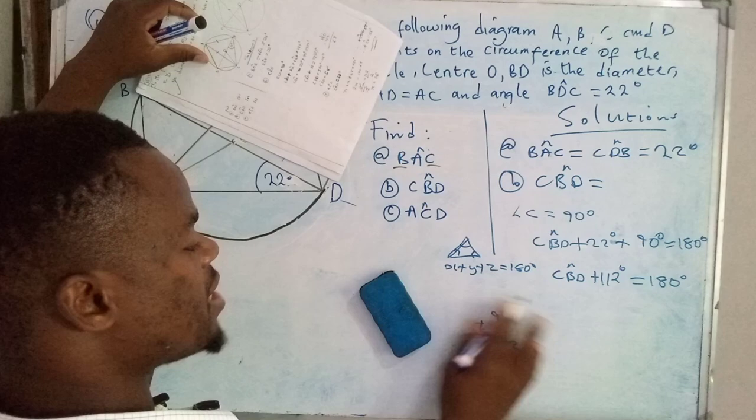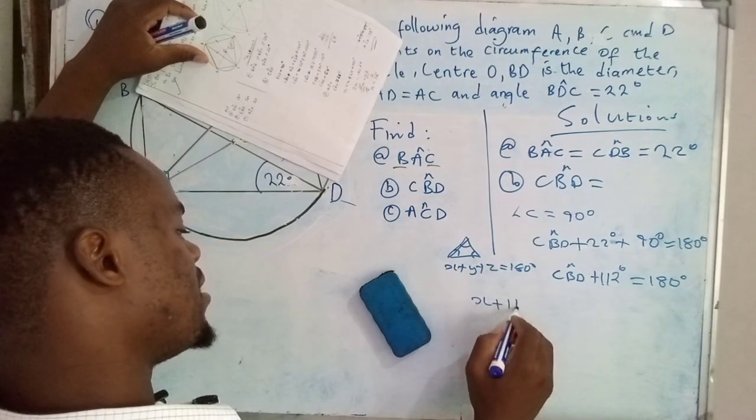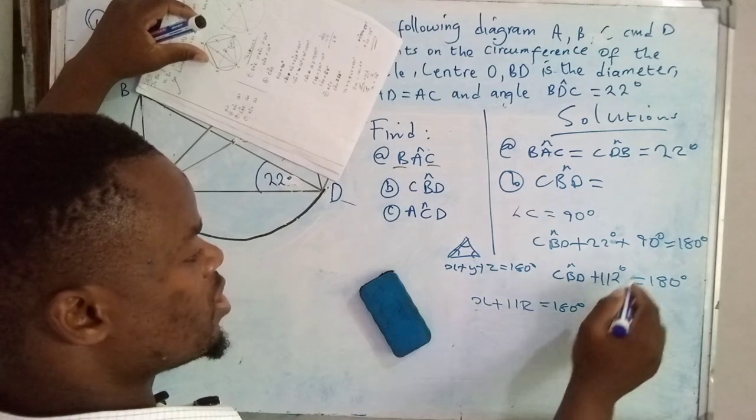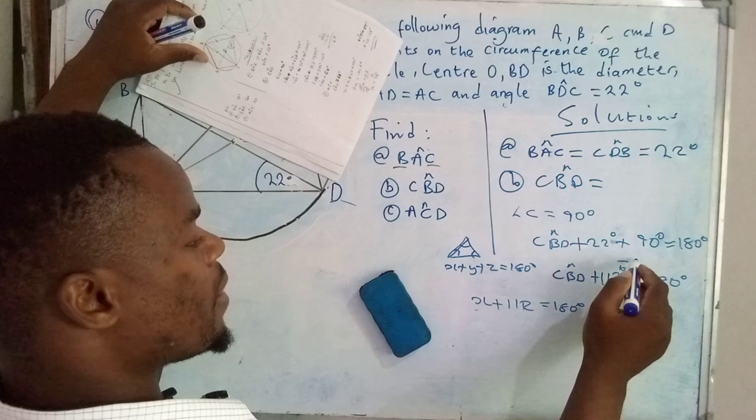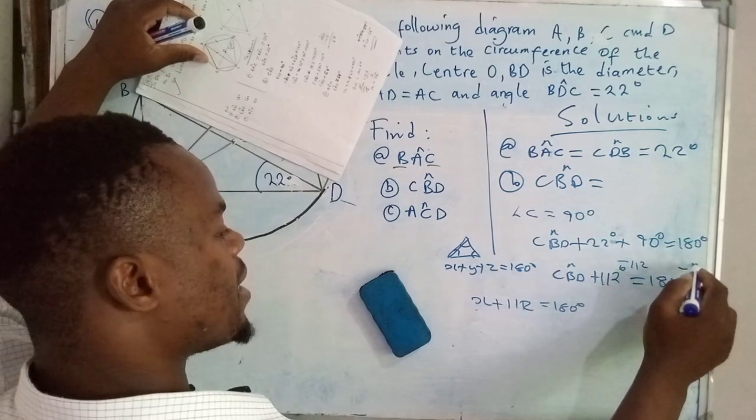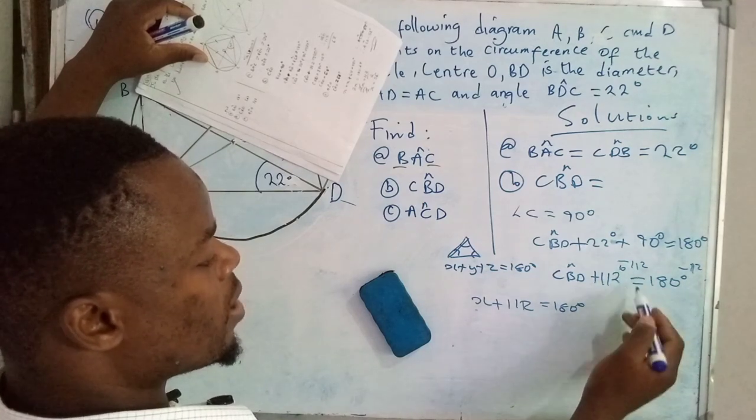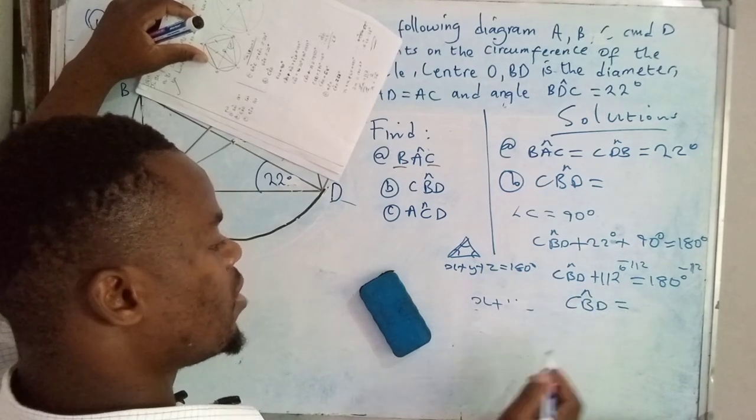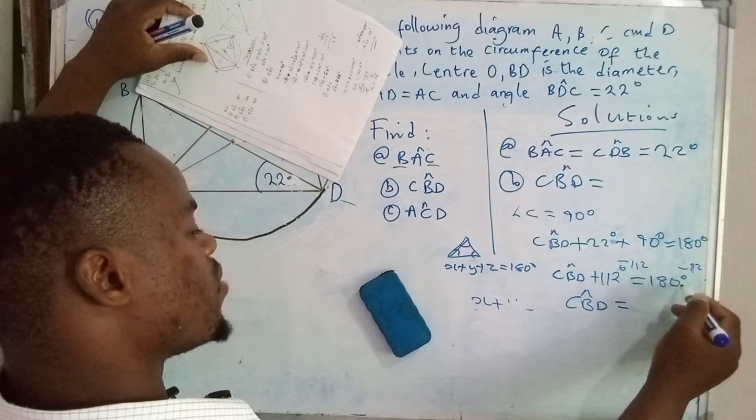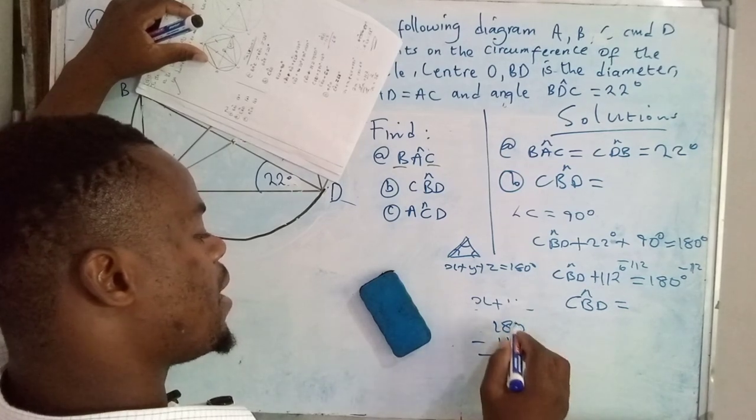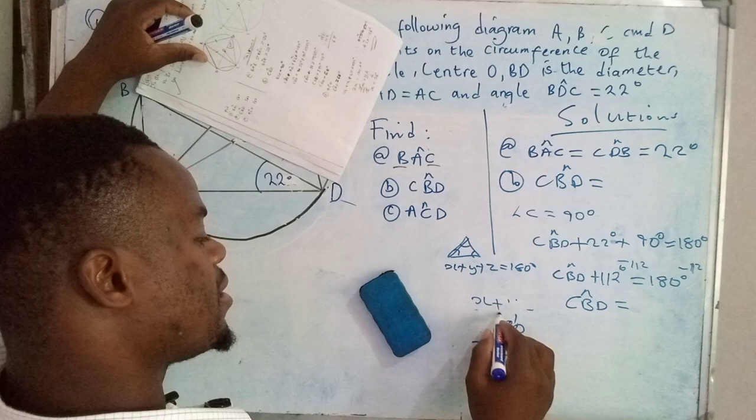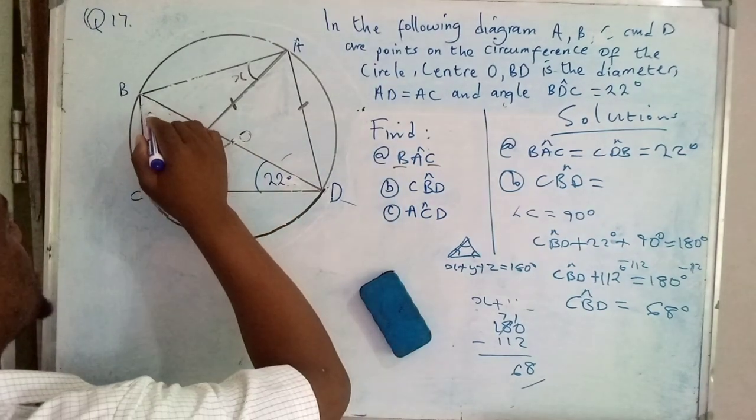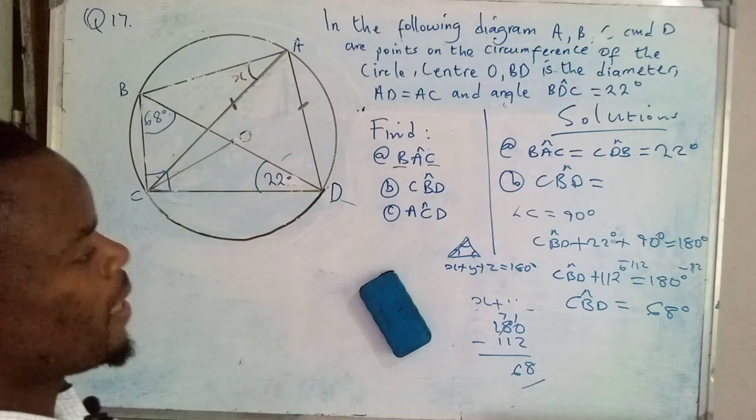Now we have a linear equation in one unknown variable. What you do is subtract the additive units, that's 112. When you subtract 112 from 112, the answer is 0, so we remain with CBD equals—we need to subtract 112 from 180. So 180 minus 112: 10 minus 2 is 8, 7 minus 1 is 6, so that's 68 degrees. This angle here is 68 degrees.